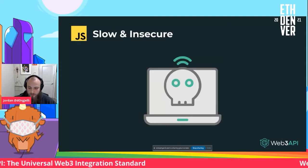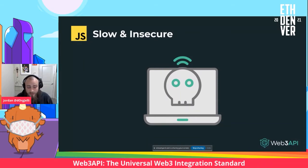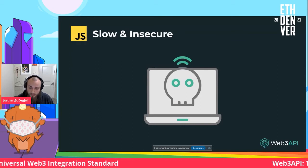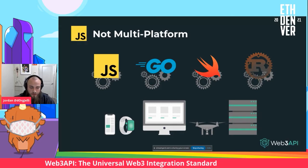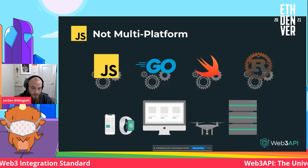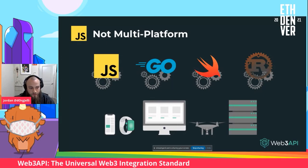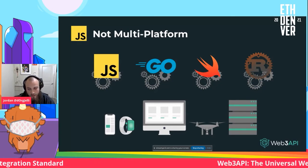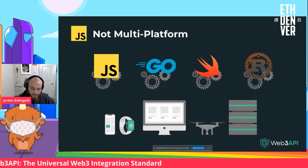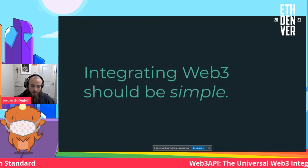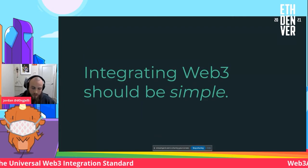JavaScript is also slow and insecure — it leads to lots of exploits that can compromise user funds, which is very important to think about in Web3. And it's not multi-platform: to support many different use cases, you need to reauthor these SDKs in many different languages. A great example is the IPFS ecosystem, which has created over half a dozen SDKs for the IPFS standard, and as they develop new things they have to update all of them — which is not very time and cost effective. Integrating Web3 should be simple if we want to reach escape velocity.